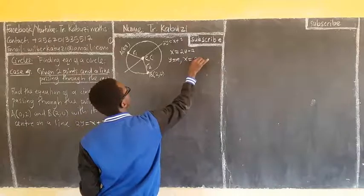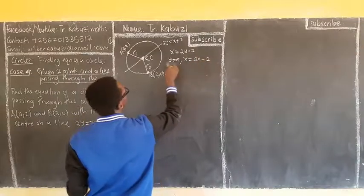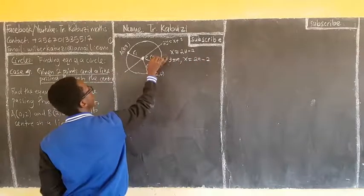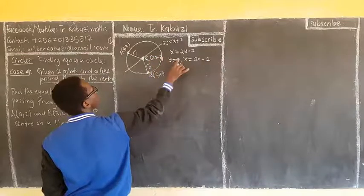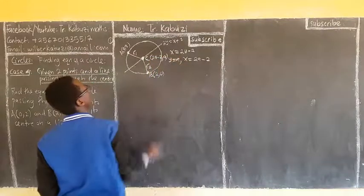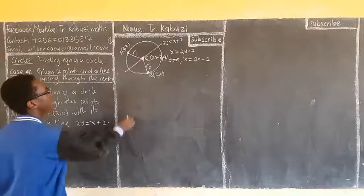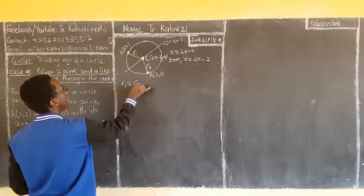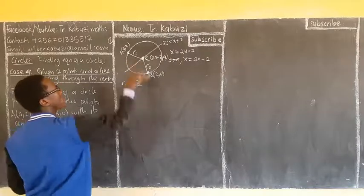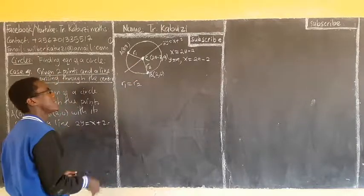So if I put it here, I have 2a minus 2 comma, the y value is a. So from there, now, you see that now, for me, my radius 1 is going to be equal to radius 2. Why? Because all of them are radius of the same circle.